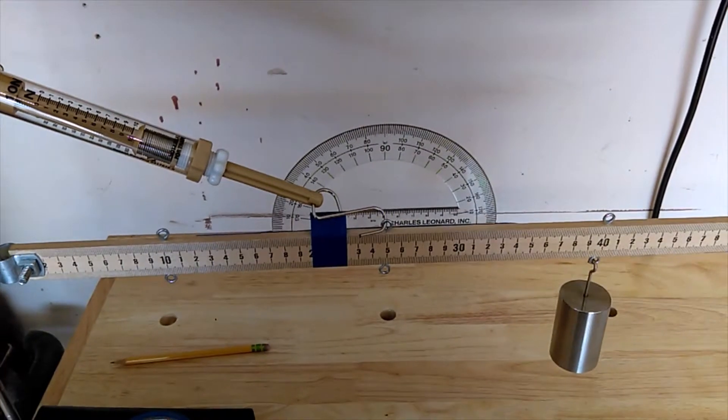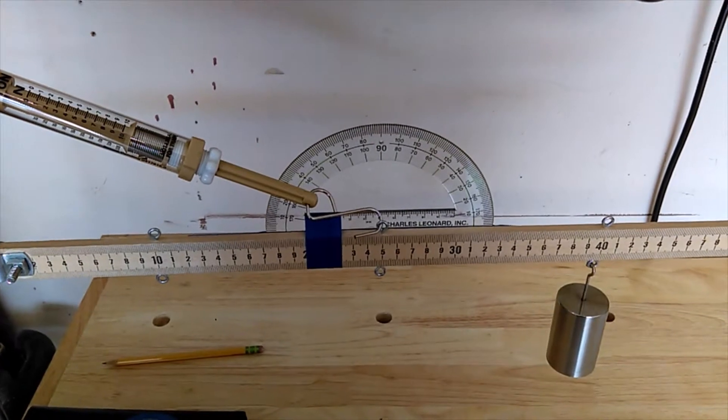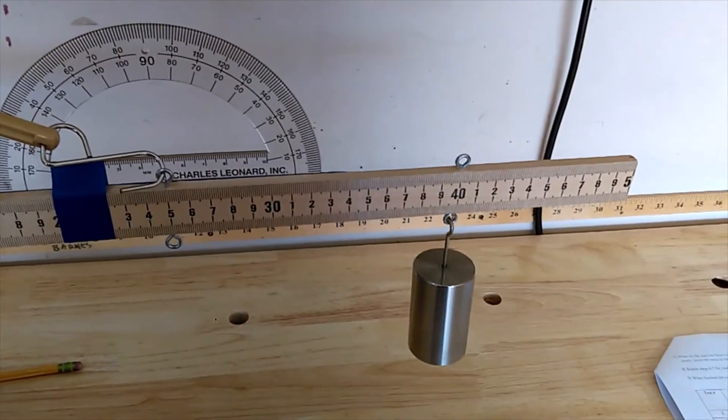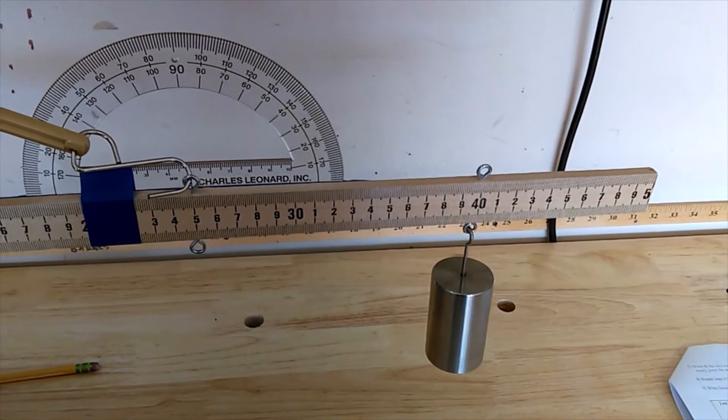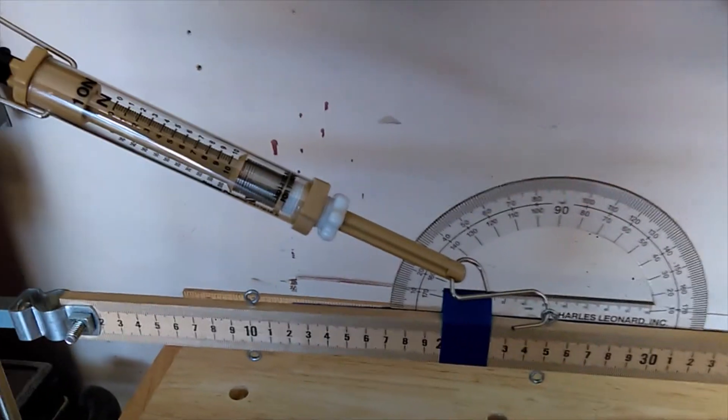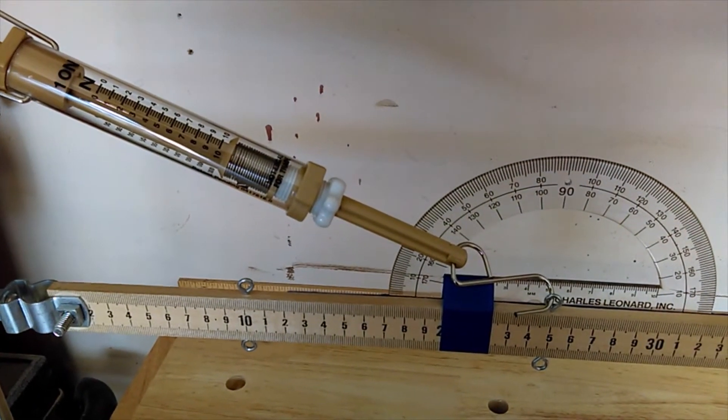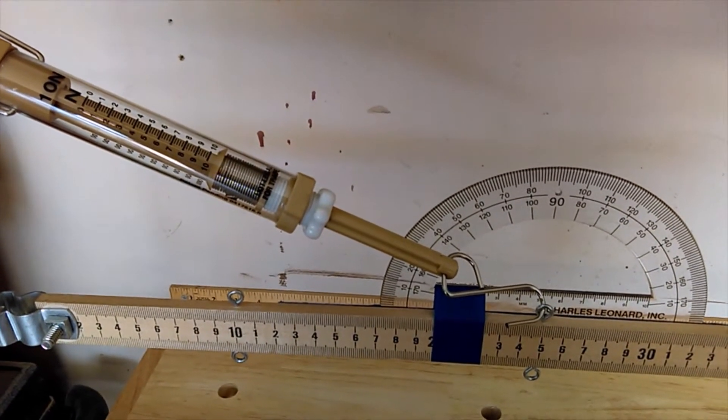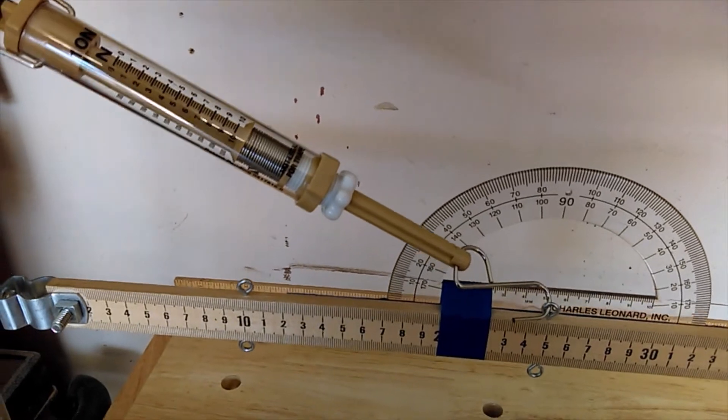We're ready for runs 10, 11, 12. Notice I've got my protractor moved over here to 25 centimeter position. Got my mass moved back out to 40 centimeter position. And at this 30 degree angle, run number 10, we're at greater than 10 newtons.